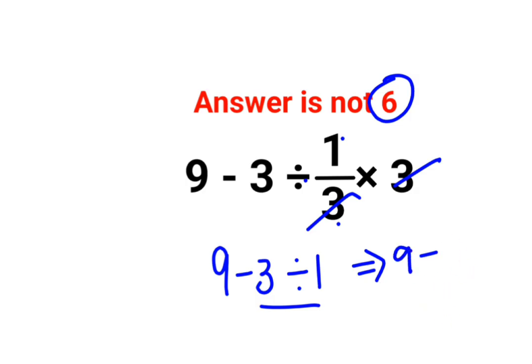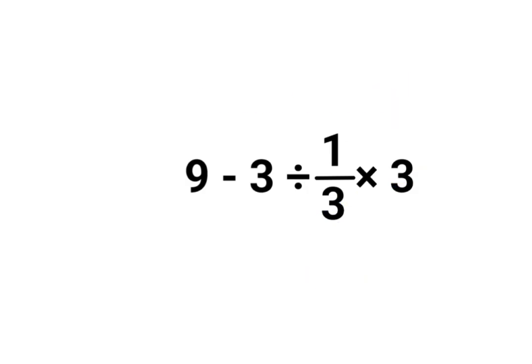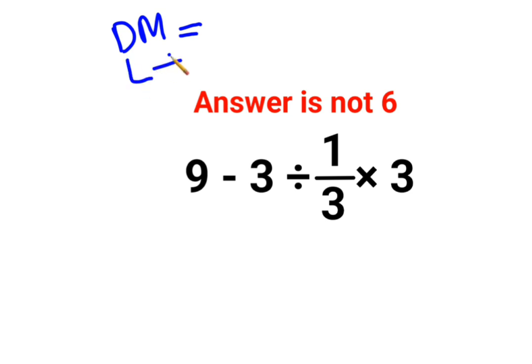But please understand, in sums like these, there is something very important to remember. Division and multiplication in mathematics hold equal importance. So in sums like these, you need to go from left to right. Whatever operation happens first on your left hand side has to be done first.